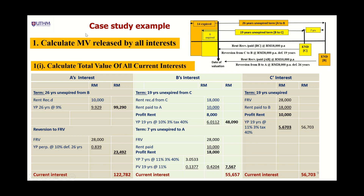First, we calculate the marriage value released by all interests — so we calculate the total value of all current interests within the property. For A's freehold interest subject to the existing tenancy, we value the term and the reversion for the tenancy agreement between A and B, which still has 26 years unexpired. Based on this working, the current interest of A as freeholder is approximately $122,000.